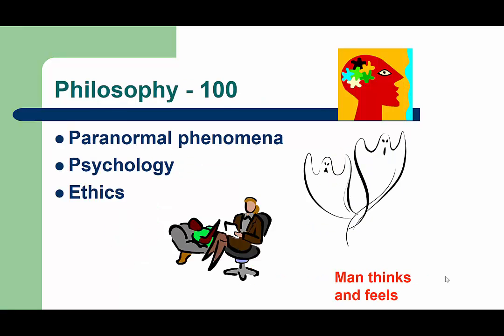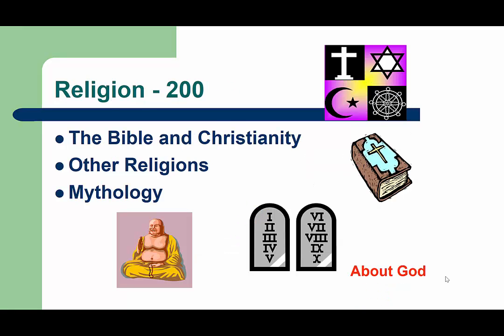The 100s, or the philosophy section, is where you'll find books about feelings, good character, and ghosts, which is kind of a weird combination. The 200s, or the religion section, is a really big section here at St. Margaret's. Besides books about Christianity and other religions like Judaism and Islam, you're also going to find the mythology books here.